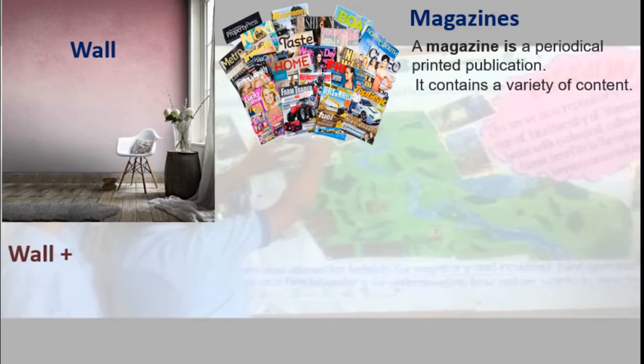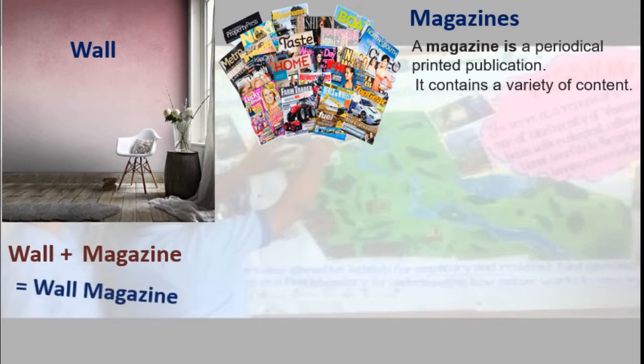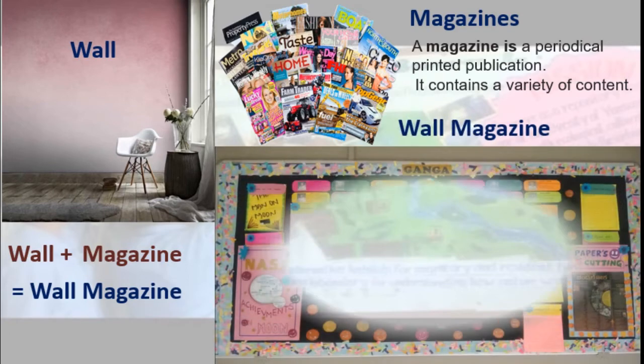This is wall plus magazine — it became a wall magazine. This is a compound word. Grammatically, we can say this is a compound word which has two different words with different meanings. First one is wall, second one is magazine. Together, it became wall magazine. Here we can see the wall magazine.